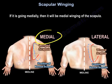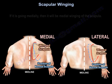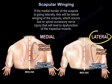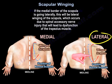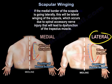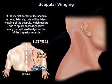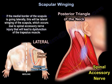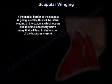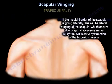If the medial border is going medially, it will be medial winging of the scapula. Or if it is going laterally, it will be lateral winging of the scapula, which occurs due to spinal accessory nerve injury, and that will lead to dysfunction of the trapezius muscle.